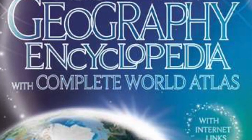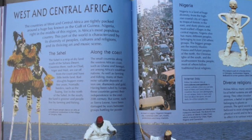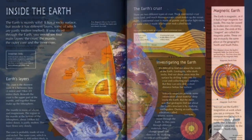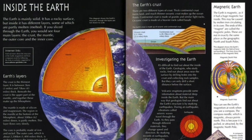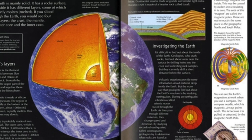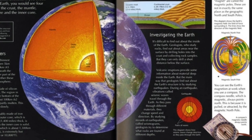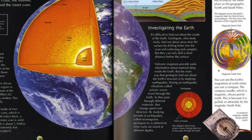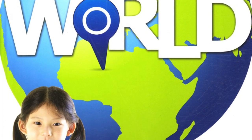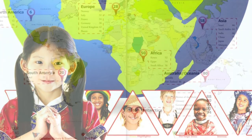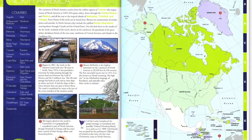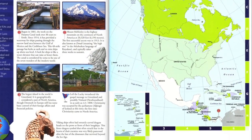The Usborne Geography Encyclopedia provides additional information and images related to these people groups, along with a world atlas. An added benefit is that it also includes information and illustrations on earth science and ecosystems, making it an excellent resource for our science study. The Children's Atlas of God's World complements our other geography selections by providing additional information regarding history, culture, missions, and landmarks for different areas of the world.